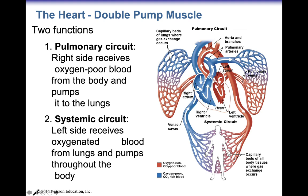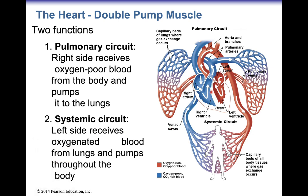The first thing I want to talk about is general heart function — the fact that the heart is a double pump. The heart is composed of a right side and a left side. The right side pumps blood to the pulmonary system, which means to the lungs. The left side pumps blood to the systemic circuit, which is the rest of the body outside of the lungs. So we call this a double pump system.